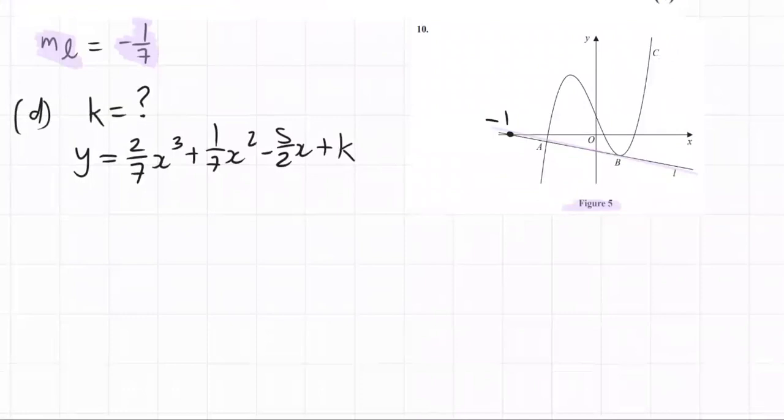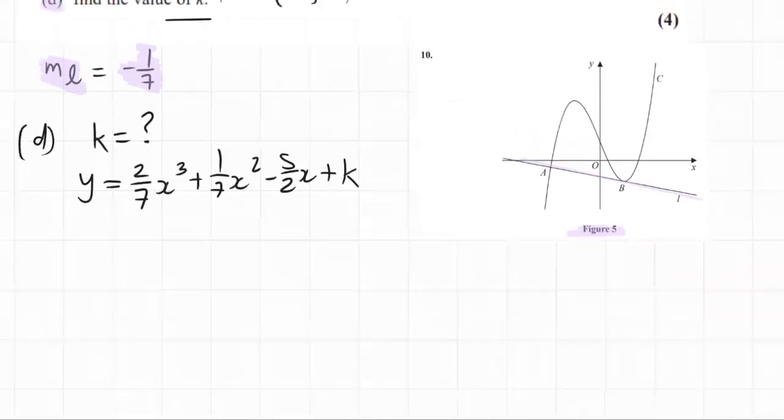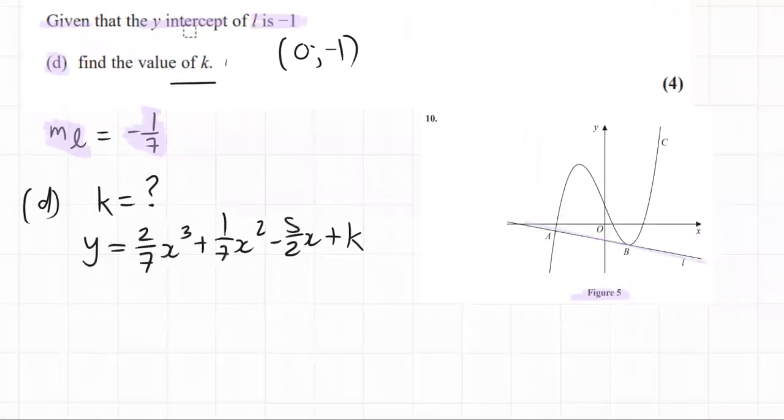First, the k is where the curve hits the... oh, this I drew in the wrong place. It's not where the line hits the x. It was where the line hits the y. So it's where the line hits the y, it's minus 1. And k is where the curve hits the y.